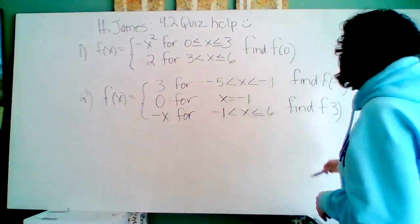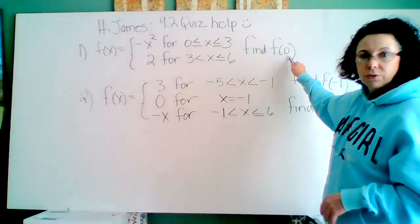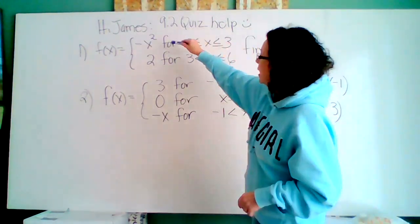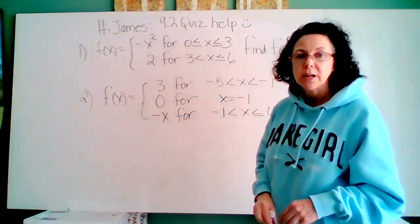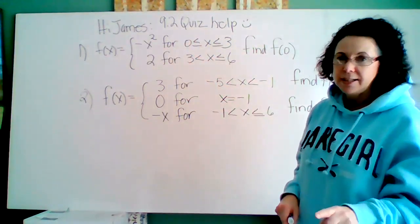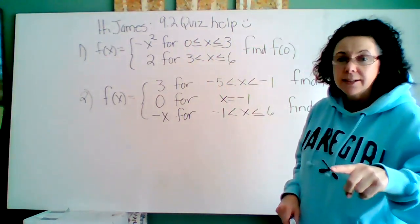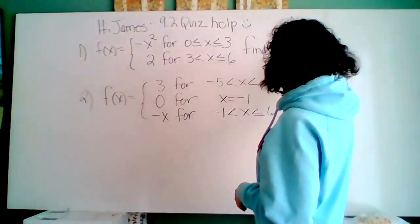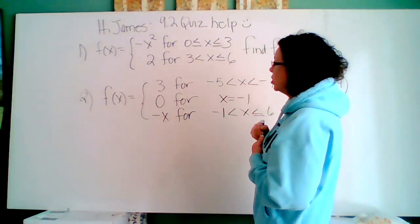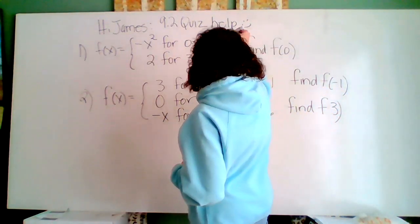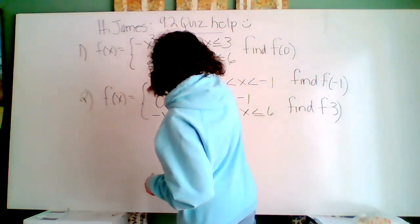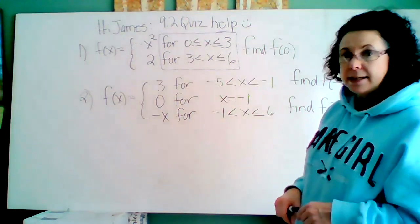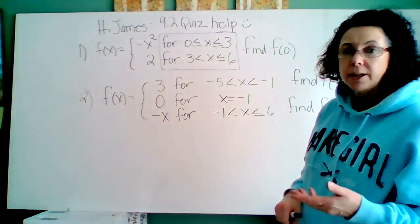And what they're asking us for is to find f of zero. When they give us one x, we are not going to have two different answers because there's two different functions. We're going to choose the correct function and use that one function. So if you notice where they saw an x, they put a zero. Now here's what we do first. We don't know which function to use. So we look here first. And what we do is we put our x in and see which one is true.